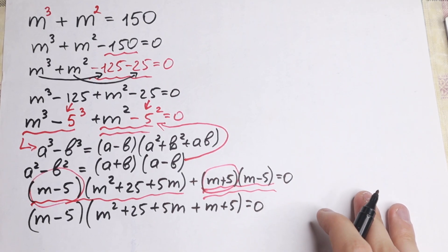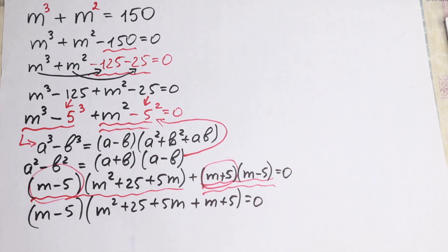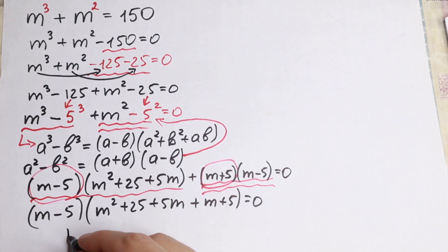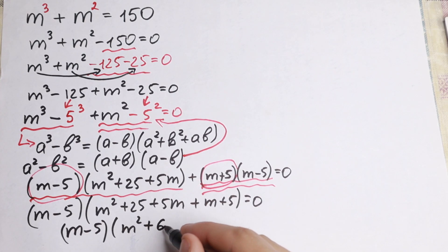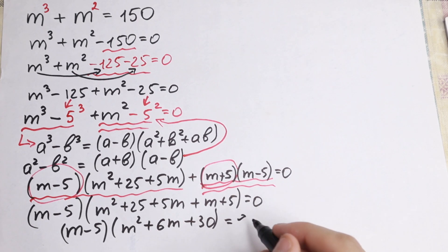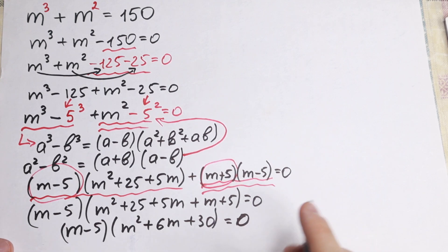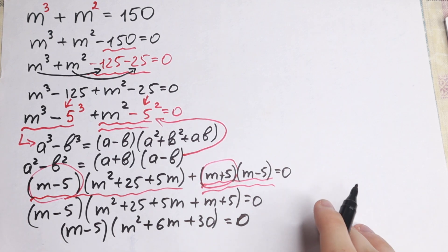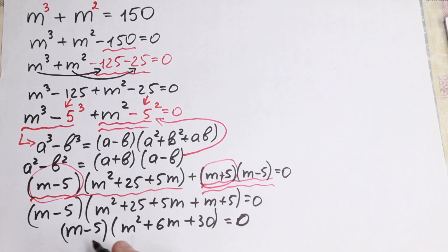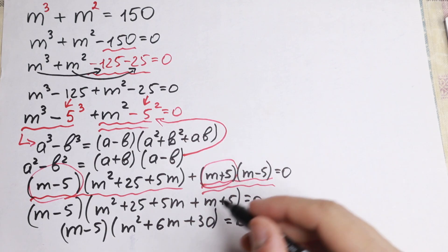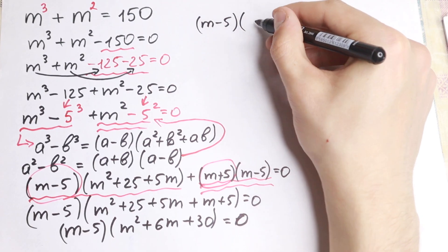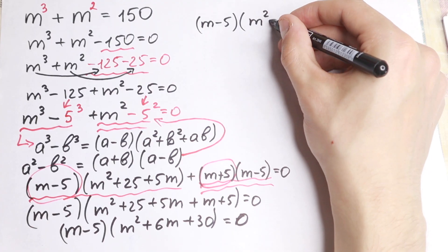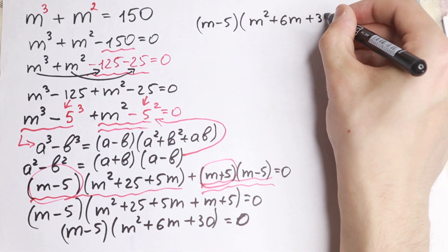As you can see, we factor our expression and can simplify it a little bit. Combining 5m plus m gives 6m, and 25 plus 5 gives 30. So our final factored form is (m minus 5)(m² plus 6m plus 30) equal to zero.